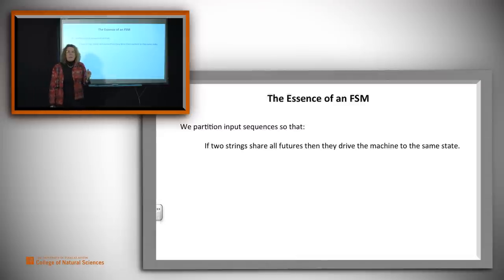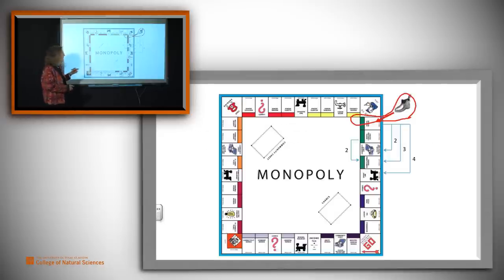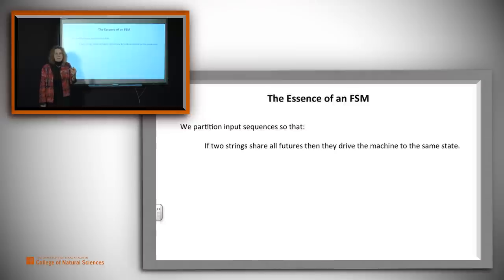So the essence of an FSM is that we partition the input sequences into sets such that if two strings share all possible futures, no matter what happens next, it's going to happen to both of them, then they land in the same state. And you can think of the states here, for example, as simply being the positions on the board. In the case of the vending machines, it's the amount of money that you've got. So the essence of an FSM is that it partitions the possibly infinite number of inputs into a finite collection of groups such that strings are in the same group in case they share a future.